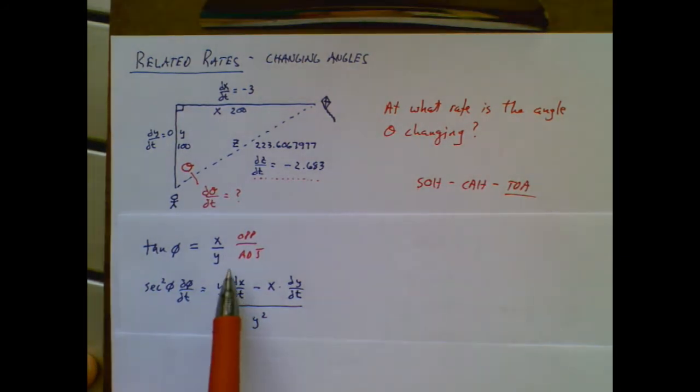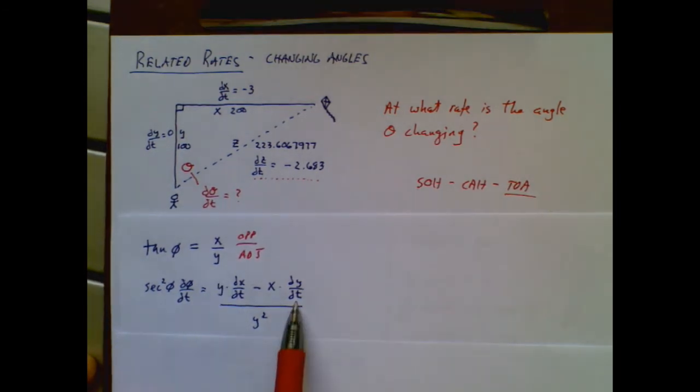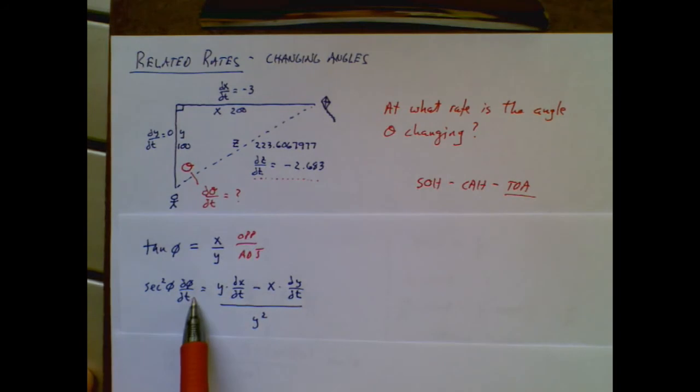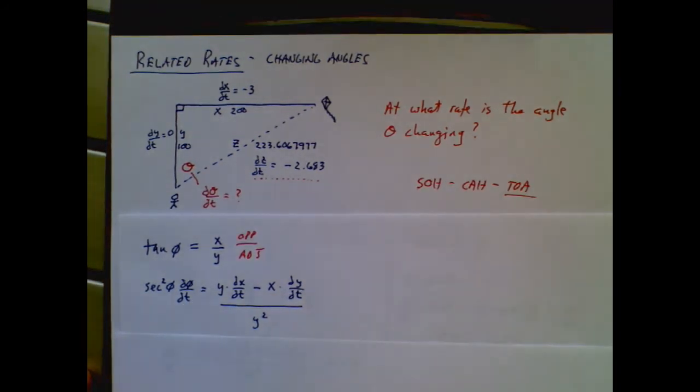Remember that when I took the derivative of the high part, the derivative of the x was a 1, but this was with respect to time. When I took the derivative of the low, it was with respect to time. And something super easy to forget, when I took the derivative of tangent, it was with respect to time.